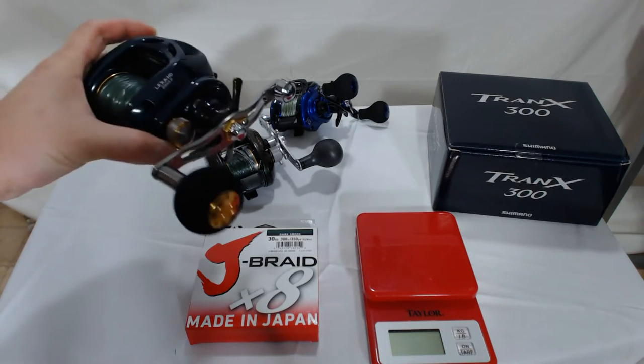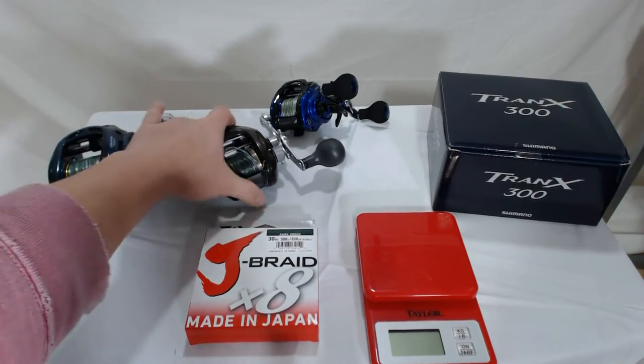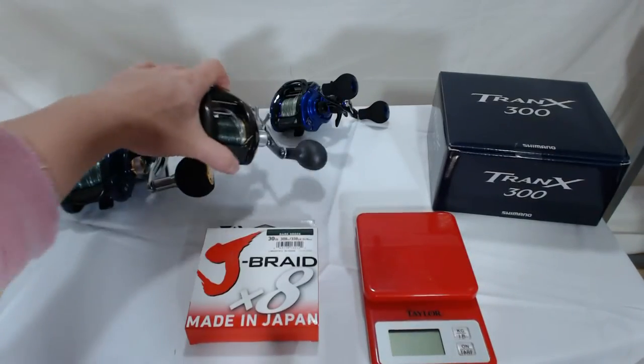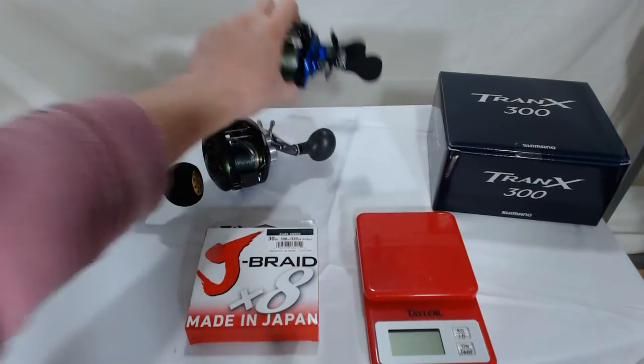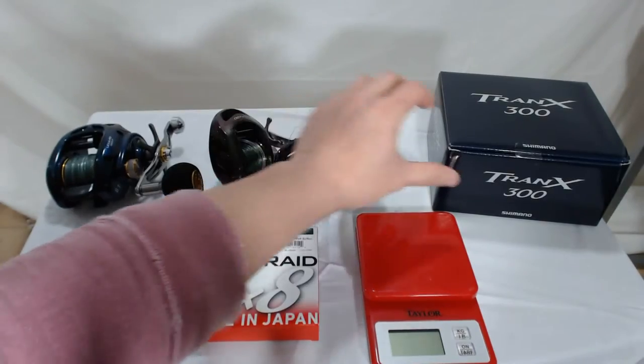This is a Daiwa Lexa HD 400 size. This is a Curato 300 EJ. And this is the Daiwa Coastal TWS, and it's very light.